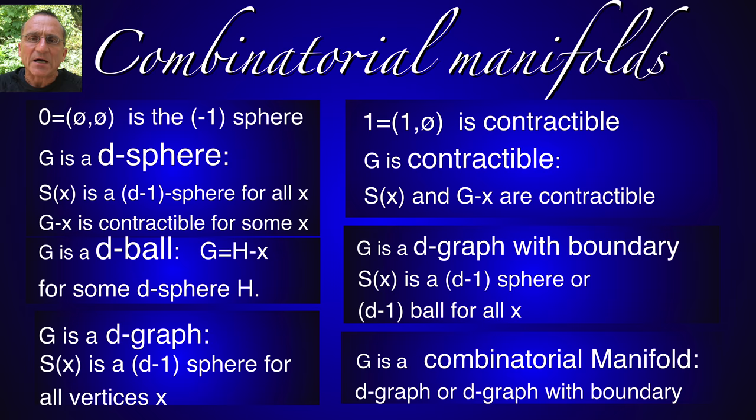A graph is contractible if there exists a vertex x such that both the unit sphere as well as the graph without x are contractible. These inductive definitions are primed by the assumption that the empty graph is the minus one sphere and the one point graph is contractible.